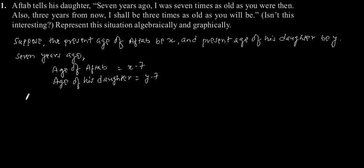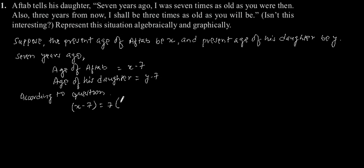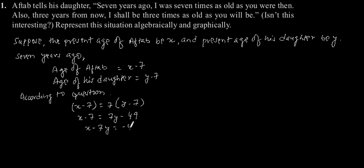According to the question, x minus 7 is equal to 7 times (y minus 7), which gives x minus 7 equals 7y minus 49, so x minus 7y equals minus 42. Let's call this our first equation.